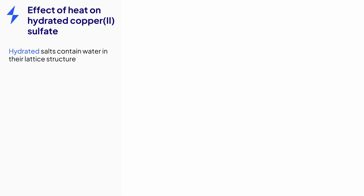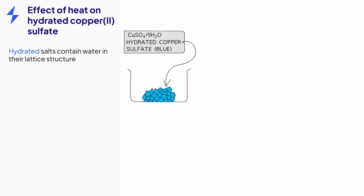Hydrated salts contain water within their lattice structure. This water is known as water of crystallization. Hydrated copper(II) sulfate is a blue solid that contains one formula unit of copper sulfate for every five molecules of water contained within its structure. The formula of hydrated copper(II) sulfate is shown by a dot between the salt and the five water molecules.